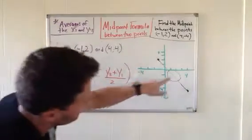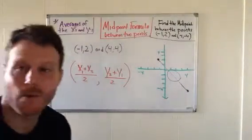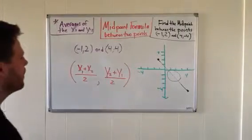That ordered pair will be the exact spot of the midpoint between the points (-1, 2) and (4, -4). So let's go ahead and jump in there and do that.